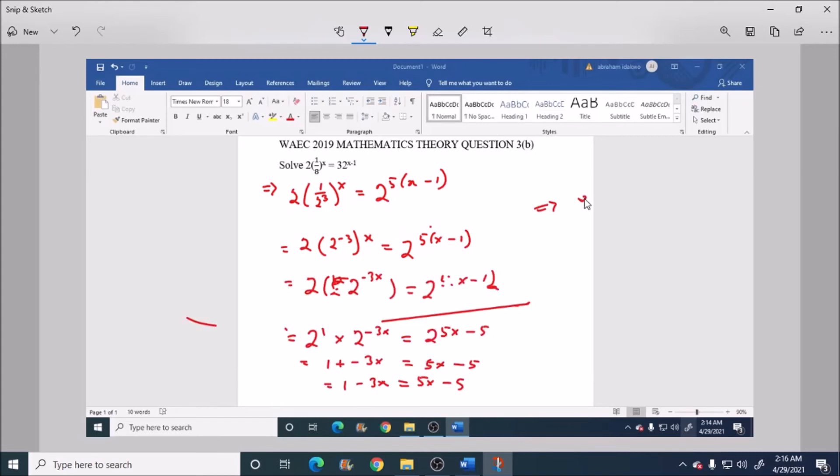We have 1 plus 5 equals to 5x plus 3x. So here we have 6.